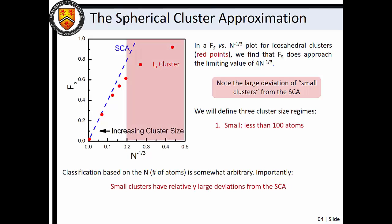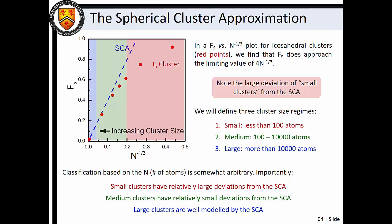Small clusters with less than about 100 atoms exhibit relatively large deviations from SCA predictions. Medium-sized clusters containing approximately 100 to 10,000 atoms exhibit relatively small deviations from the SCA, and large clusters containing more than 10,000 atoms are well modeled by the SCA.